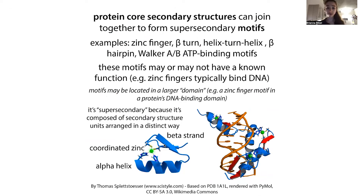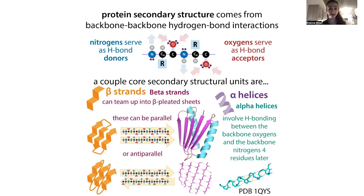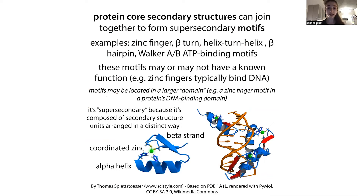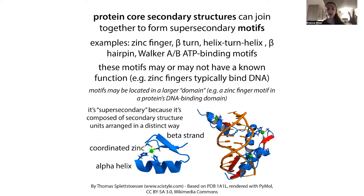Those strands can link up to form beta sheets, and you can have sheets, helices, and various loops. From these arise super-secondary motifs — secondary structure units arranged in a distinct way. Then you can have tertiary motifs where more elements get involved, and when you get to these larger units you're getting into the domain of domains.